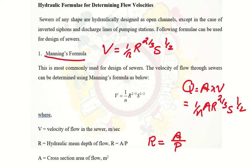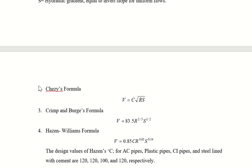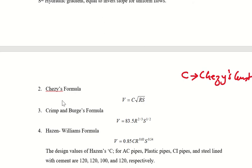The second equation is Chezy's formula: V = C × √(R × S), where C is Chezy's constant, R is hydraulic radius, and S is slope of the channel. The next one is Trumson-Birth's formula, where velocity = 83.5 × R^(2/3) × S^(1/2). The next formula is Hazen-Williams formula: V = 0.85 × C × R^0.63 × S^0.54.